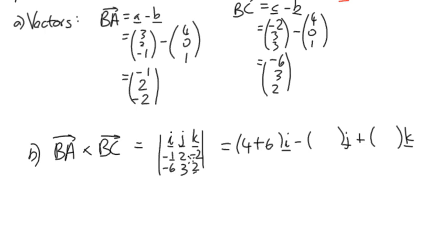minus -6 times -2 is 12. So it would be plus 12, and I end up with 10I plus 14J plus 9K.